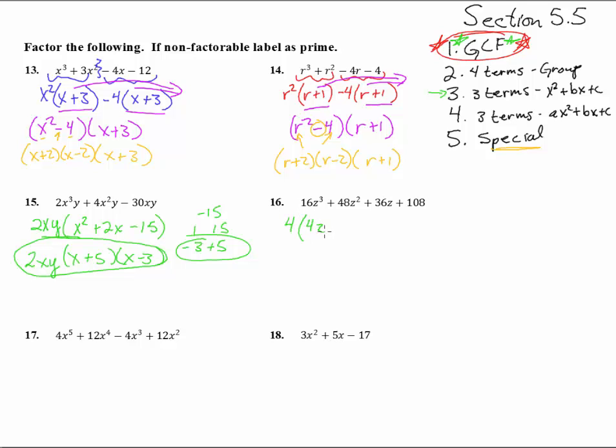We're left with 4Z cubed plus 12Z squared plus 9Z plus, what is that, 27, I think? I think so. Well, what's left? We have 1, 2, 3, 4 terms, so we're looking to see if we can group. So let's group these guys right here, split it in half, and see what we can pull out of the first two.